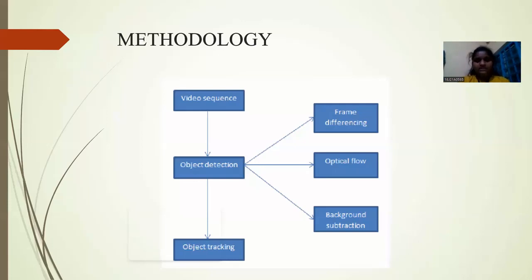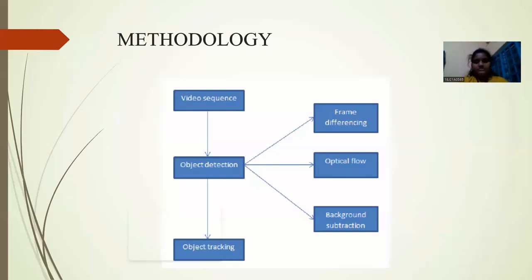In optical flow, the differences between the current frame and the previous frame are shown so that the object's movement is displayed in real time. In background subtraction, the foreground is subtracted from the background.